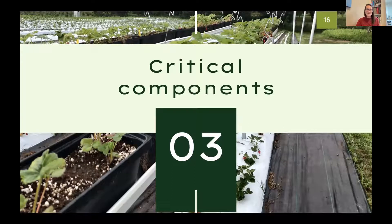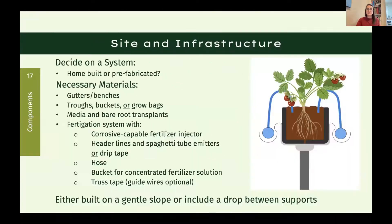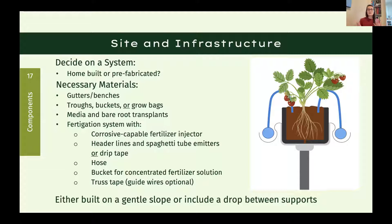For site and infrastructure, the first decision is whether to build and design the system yourself or use a prefabricated system. Prefabricated systems are very sturdy — frequently galvanized steel — and last a long time but are more expensive. Regardless of which you pick, you need a gutter as your support structure, whatever you're planting into (troughs, buckets, pots, or grow bags), soilless media if not using grow bags, bare root transplants, and a fertigation system. Critically, you need a corrosive-capable fertilizer injector, a header line with spaghetti tube emitters or drip tape, a hose, a concentrated fertilizer solution bucket, and truss tape.